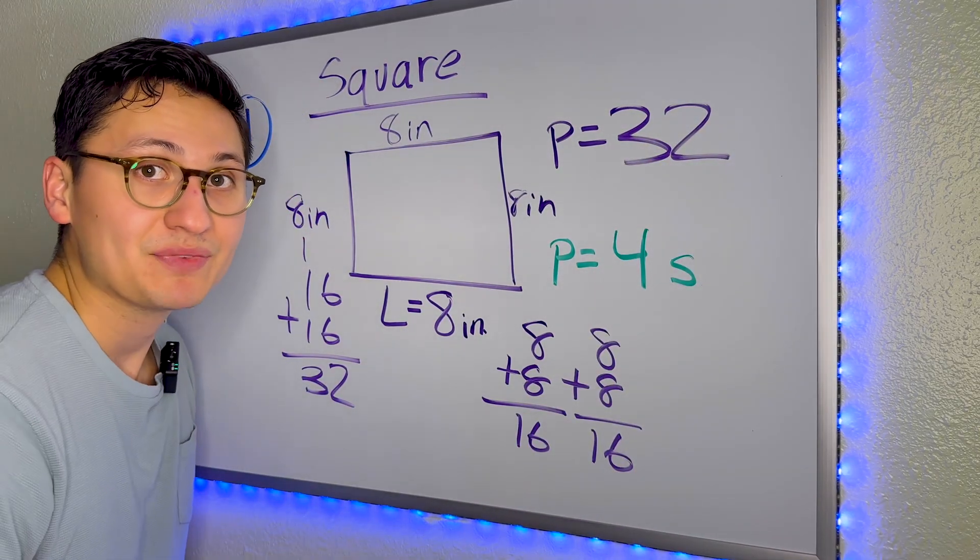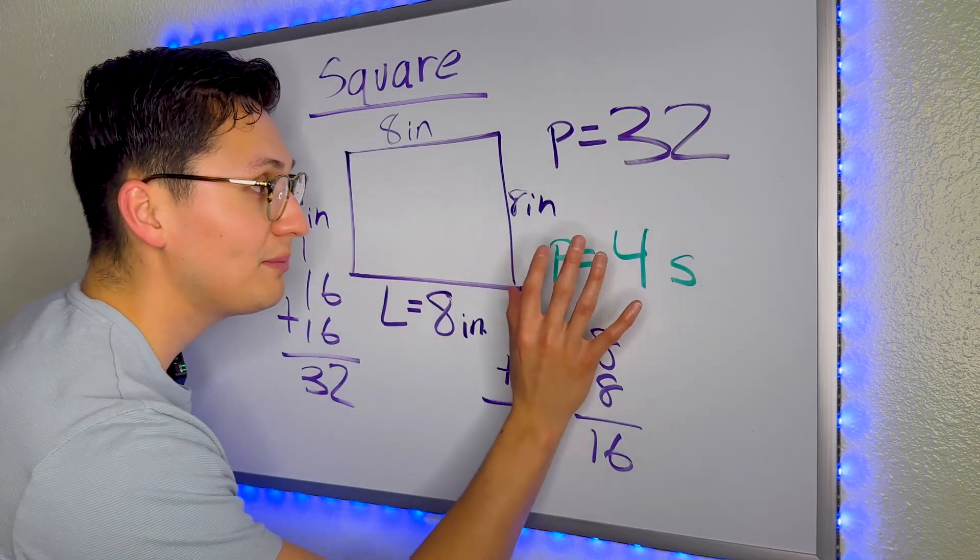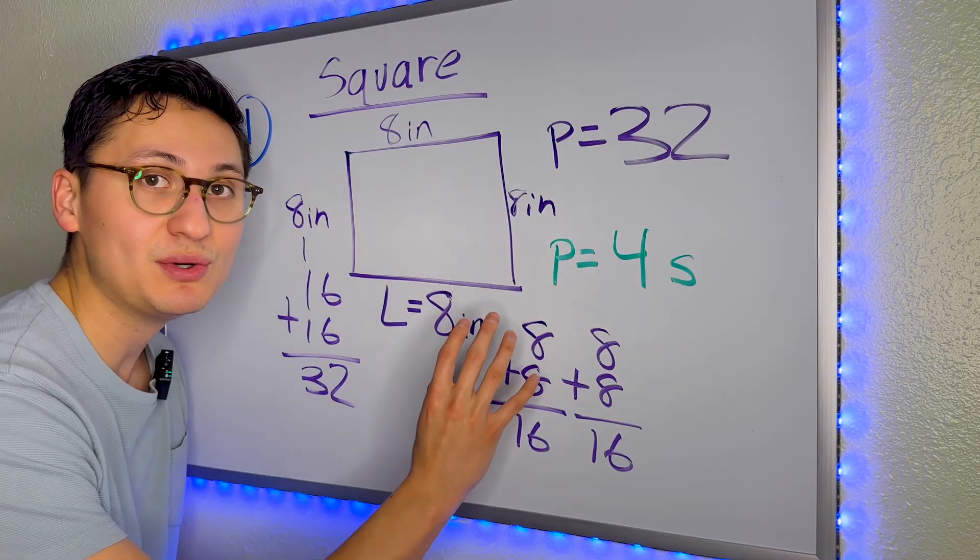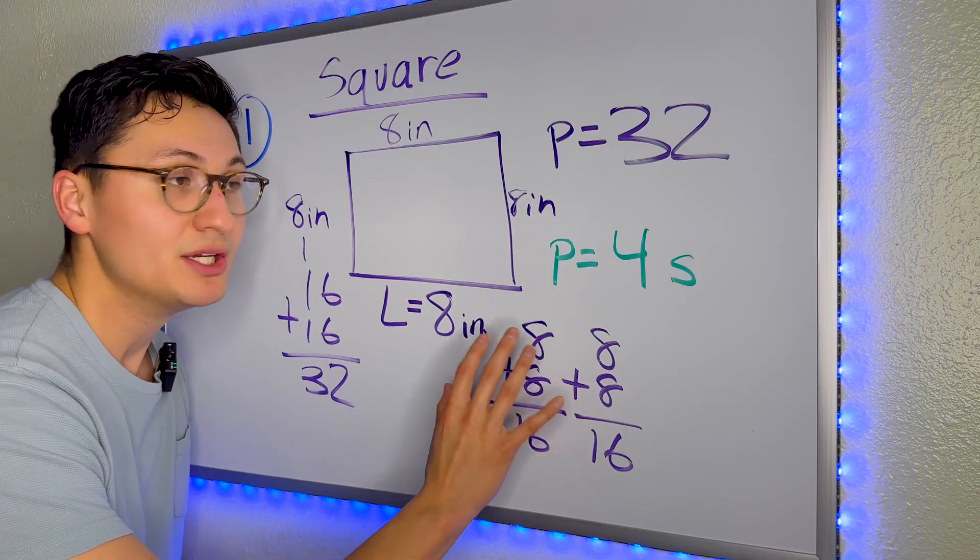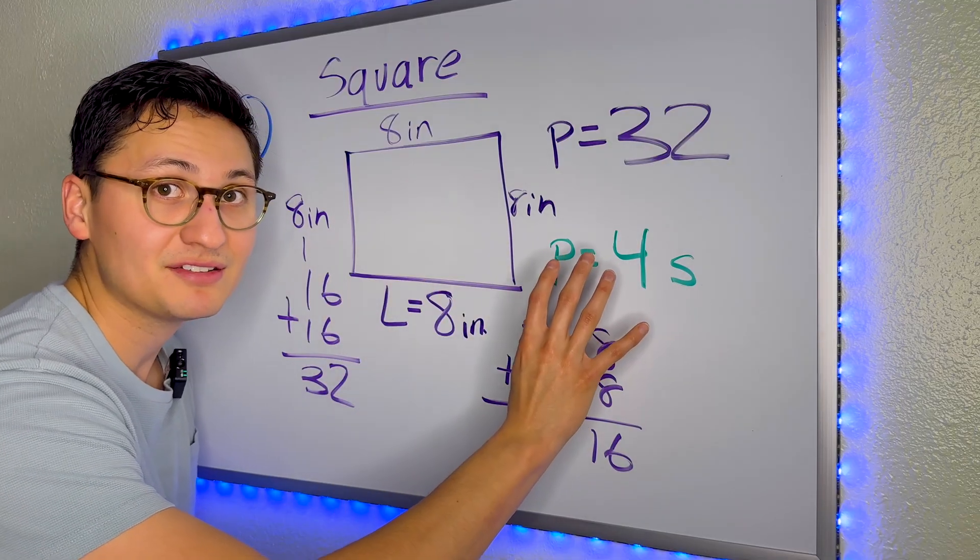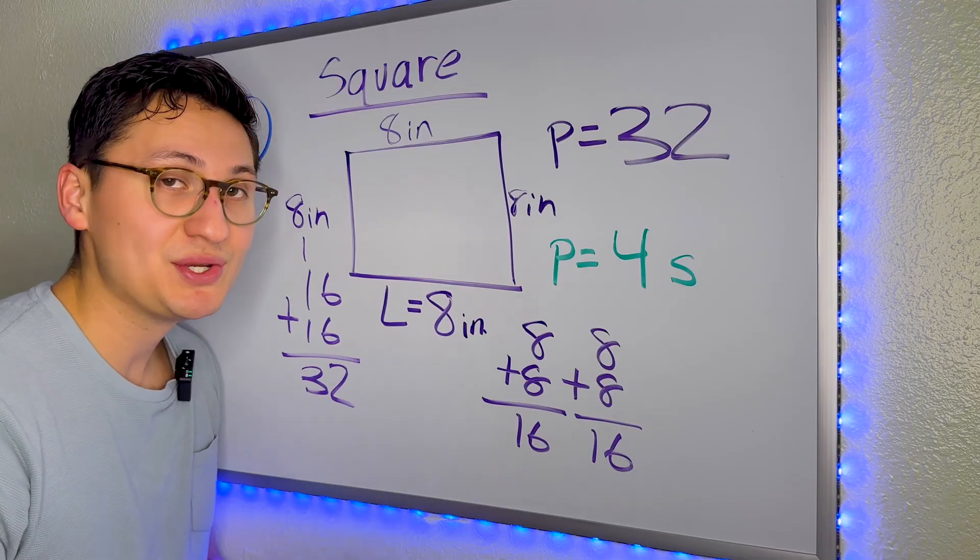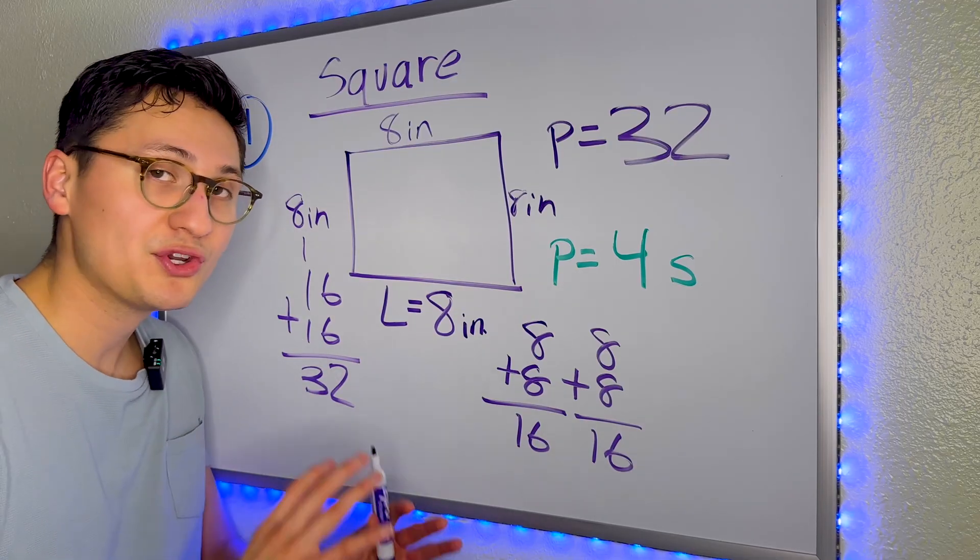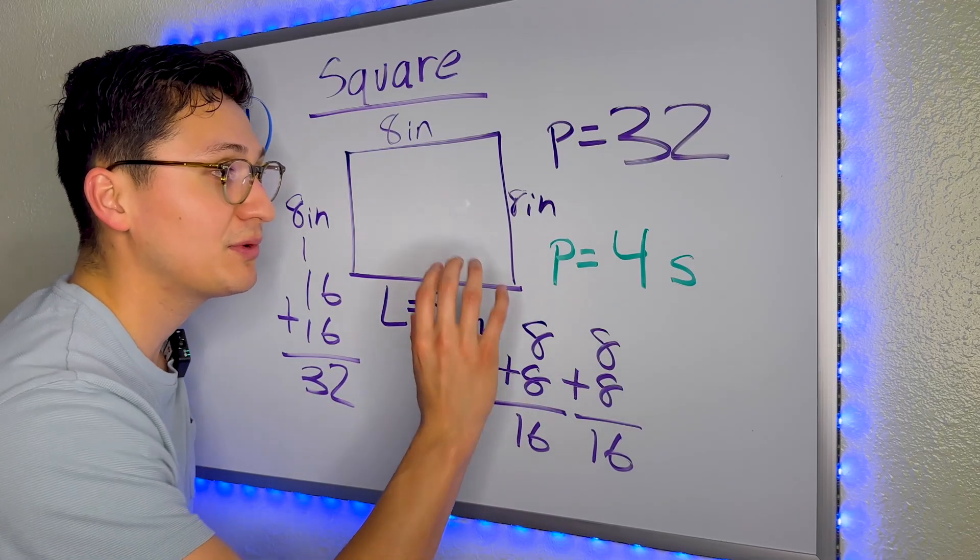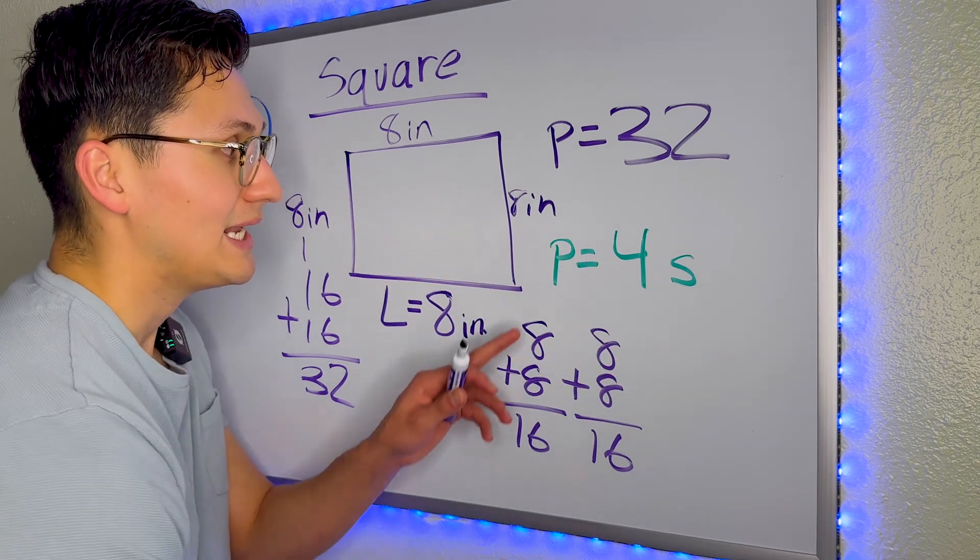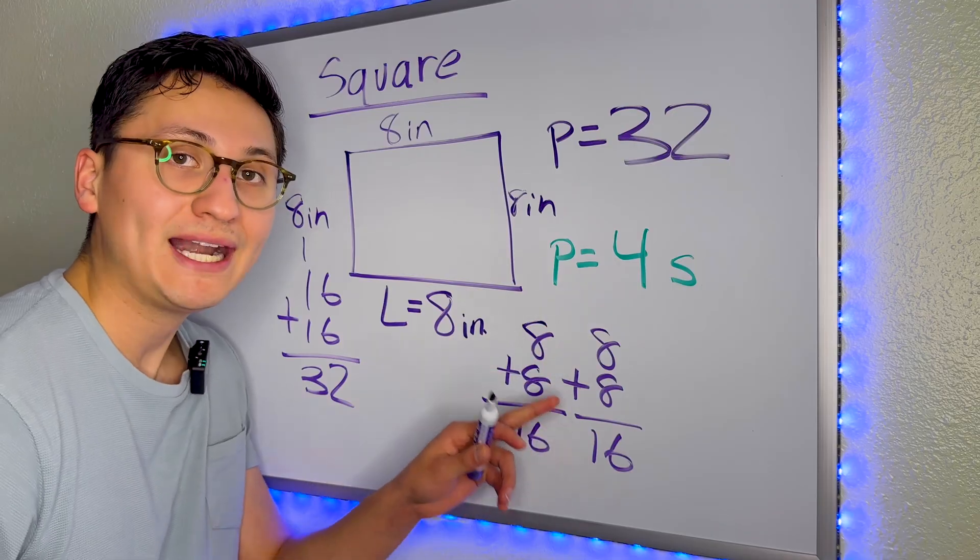The other way to do it is to use our formula. This formula is going to be given to you on the day of your exam. So you don't have to memorize this, but it comes in handy. Because if for some reason you get nervous during your quiz or your exam, you can always refer back to this formula. Now this formula is perimeter equals four S.